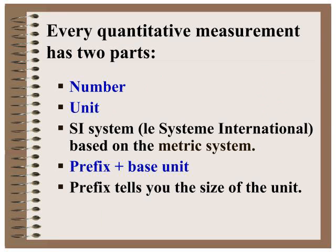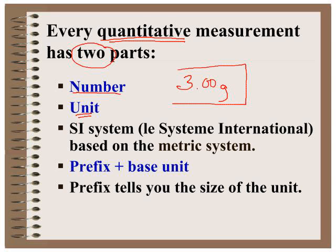When you make your quantitative measurements, each measurement has two parts: it has a number — 3.00 — and it has a unit — grams. Both of these parts are necessary for a complete measurement. Simply writing 3 doesn't tell us what we are measuring. Grams tells us that we are measuring mass, so we need to make sure we put a unit.